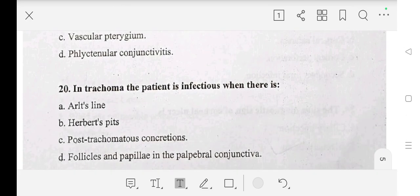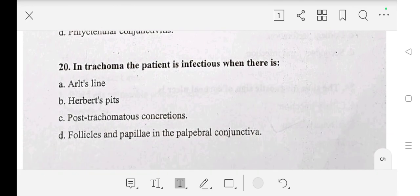Twentieth question: in trachoma, the patient is infectious when there is Arlt's line, Herbert's pit, post-trachomatous concretions, or follicles and papillae in the palpebral conjunctiva? Answer is follicles and papillae in the palpebral conjunctiva. Thank you.